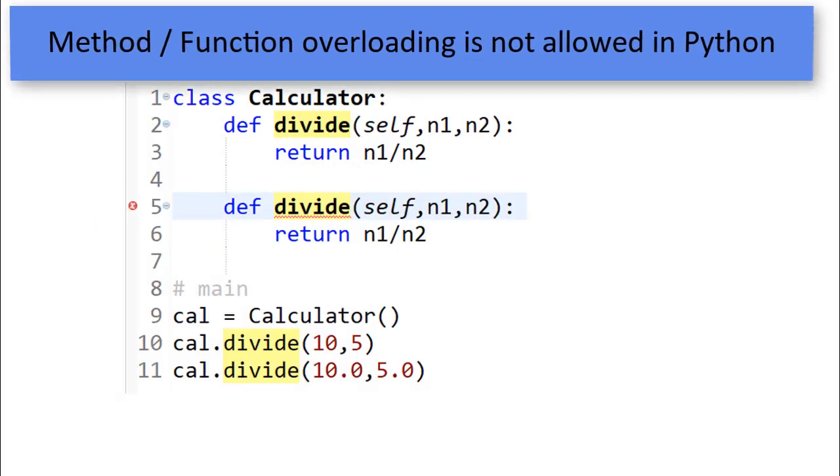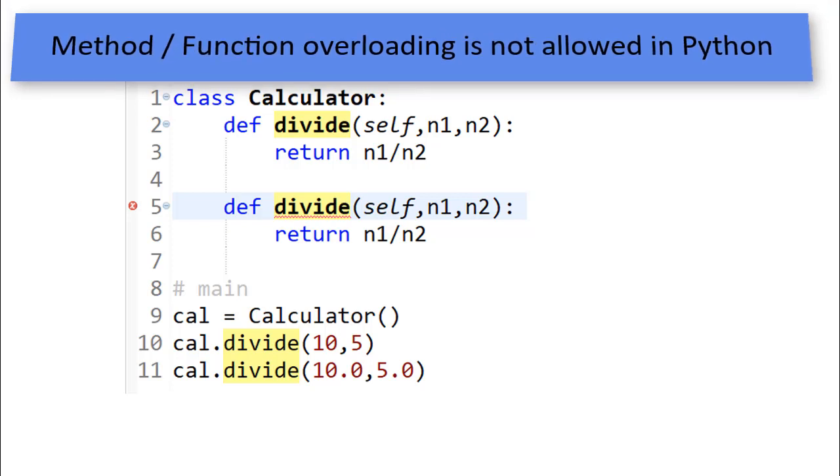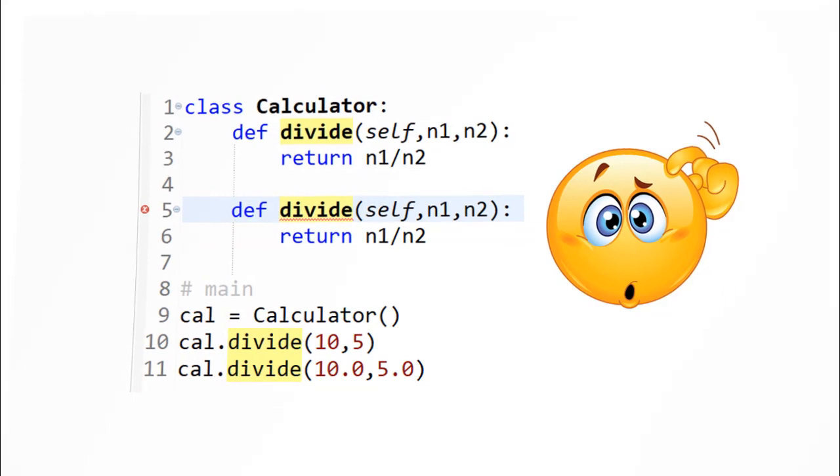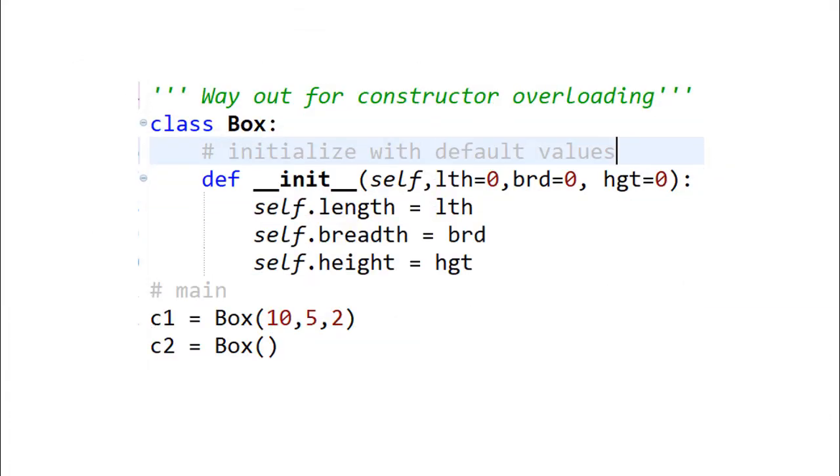Method or function overloading is not allowed in python, since it is dynamically typed language. What it means is, all the data types are same before mapping. Hence, interpreter cannot map it correctly.